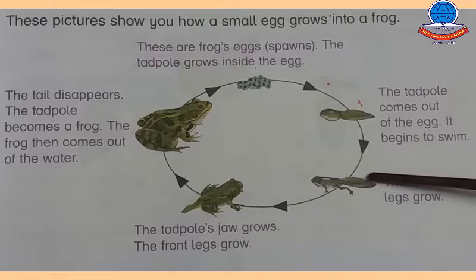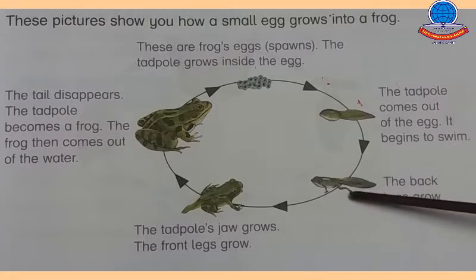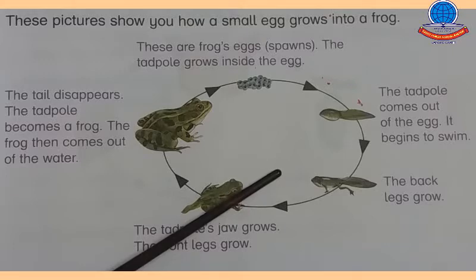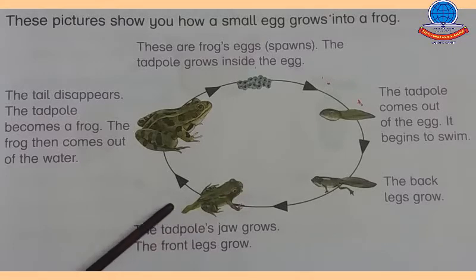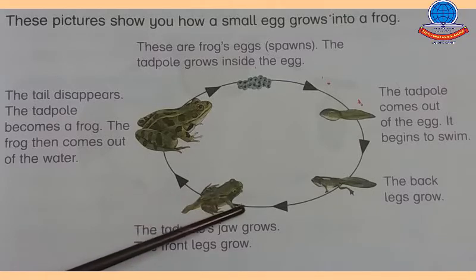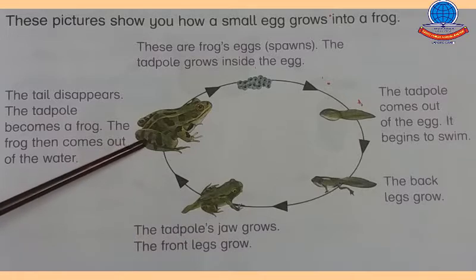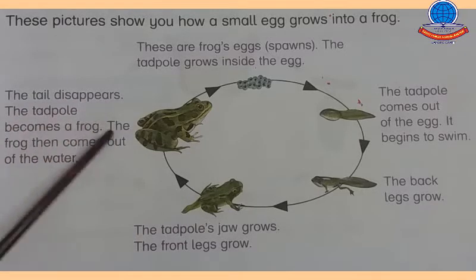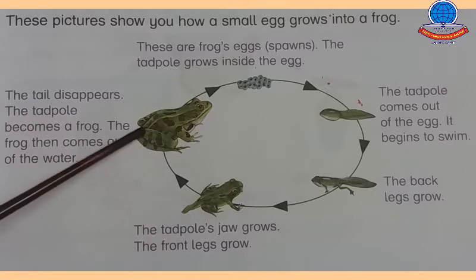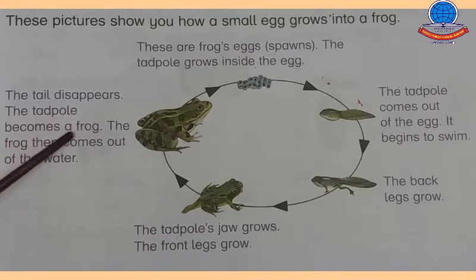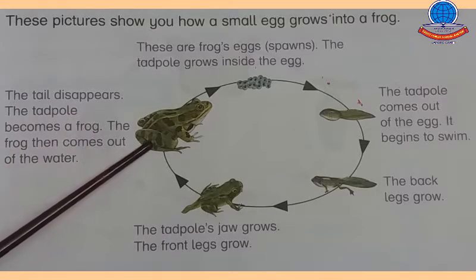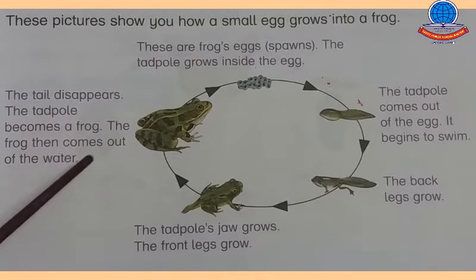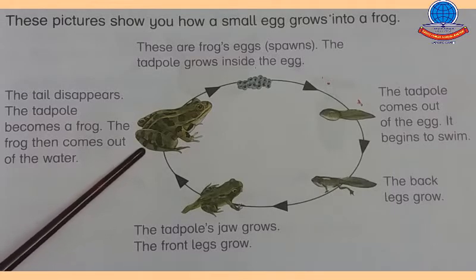Third step: The back legs grow — tadpole ki pichli do taangein grow hoti hain. Fourth step: The tadpole's jaws grow and the front legs grow — uske jaws grow hote hain aur front legs bhi dhire dhire grow hoti hain. Last step: The tail disappears — uski tail disappear ho jaati hai, and the tadpole becomes a frog. The frog then comes out of the water. Yeh frog ke life cycle ke steps the.